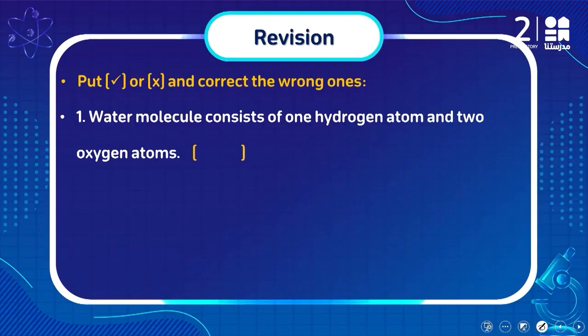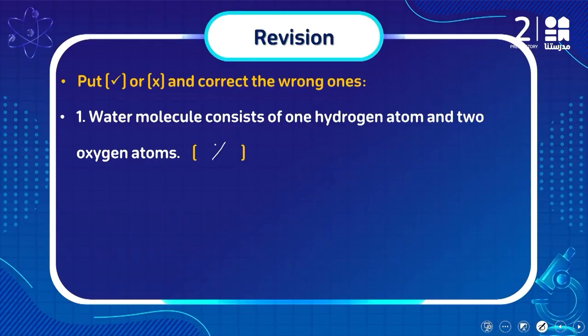A water molecule consists of one hydrogen atom and two oxygen atoms — this doesn't make sense at all and needs to be corrected. The opposite is true: the water molecule has two hydrogen atoms and one oxygen atom.